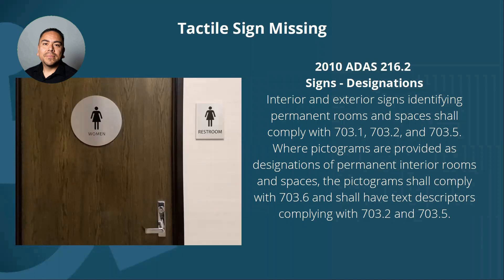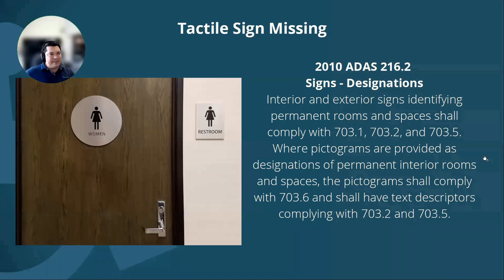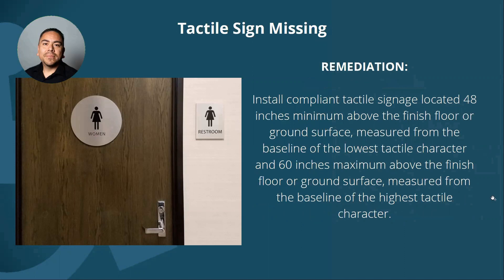Interior and exterior signs identifying permanent rooms and spaces shall comply with sections 703.1, 703.2, and 703.5. Where pictograms are provided — though not required — pictograms are never required as destinations for permanent interior rooms and spaces. The pictogram shall comply with section 703.6. There was a lot of detail in this section; we didn't want to try to put it all in here since it could be its own webinar. Just go to ADS 703.1, 703.2, and 703.5 and you'll see all the tactile character designations.